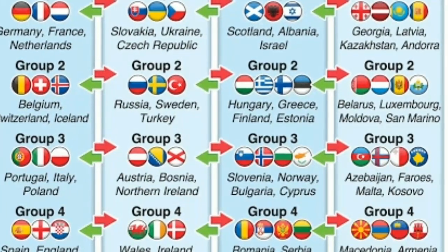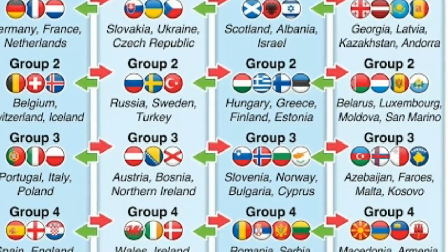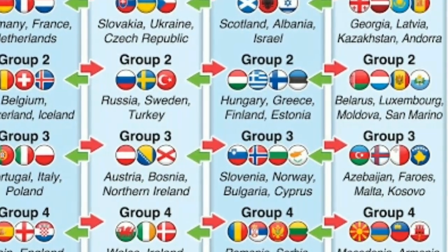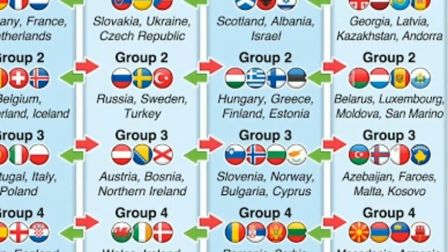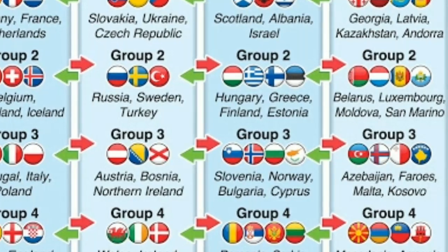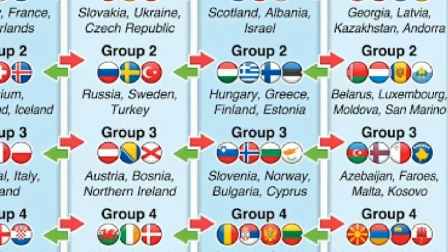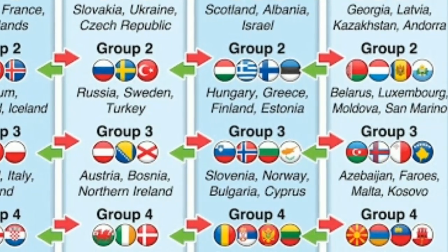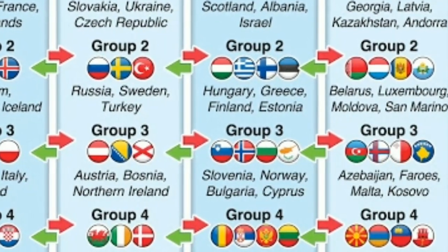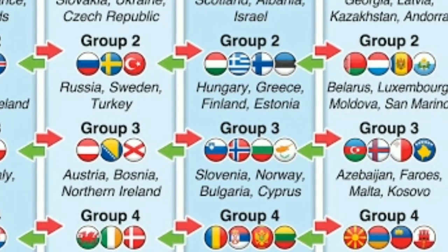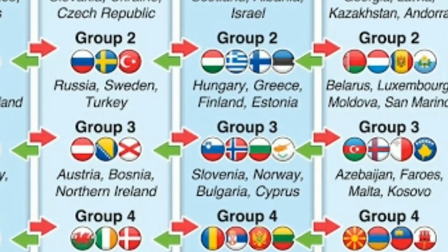League C Group 1: Israel, Albania, Slovenia. Group 2: Estonia, Finland, Greece, Hungary. Group 3: Cyprus, Bulgaria, Norway, Slovenia. Group 4: Lithuania, Montenegro, Serbia, Romania.